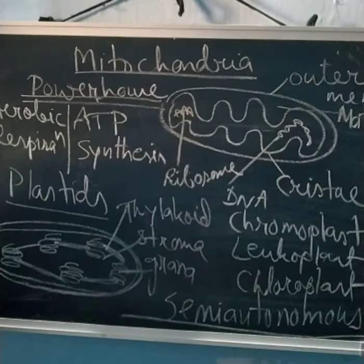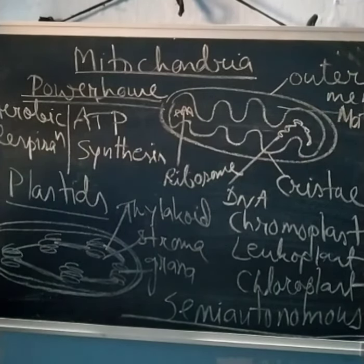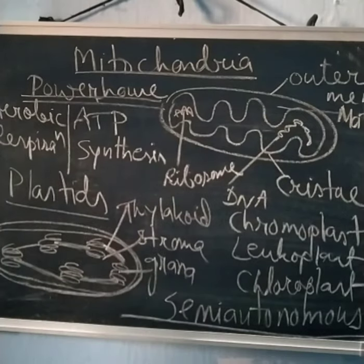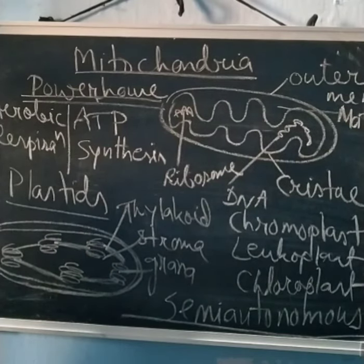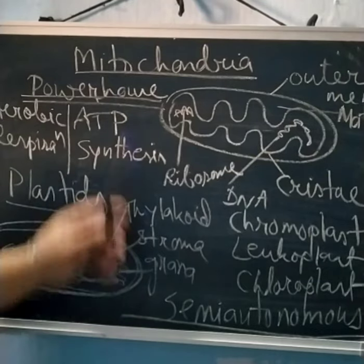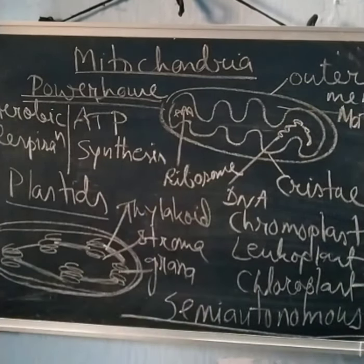Continuing the discussion of the fundamental unit of life — the cell — and cell organelles. We have already discussed the endoplasmic reticulum, cytoplasm, RER, SER, Golgi apparatus, and lysosomes. We also briefly discussed mitochondria, which we will now revisit before continuing with the remaining cell organelles.